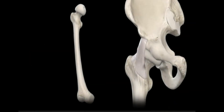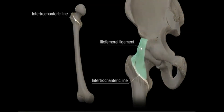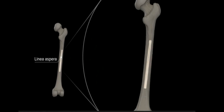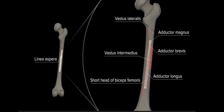Anteriorly, between the greater and lesser trochanters is the intertrochanteric line, which is the attachment site of the iliofemoral ligament, the largest of the ligaments that make up the hip capsule, and the most proximal origin of the vastus medialis. Posteriorly, the diaphysis of the femur has a ridge called the linea aspera that serves as the origination and insertion point for muscles and intramuscular septa about the hip.